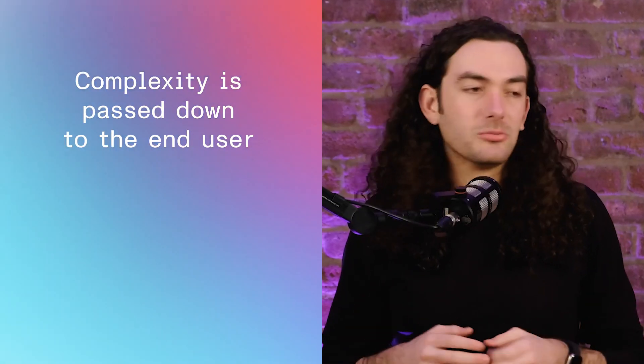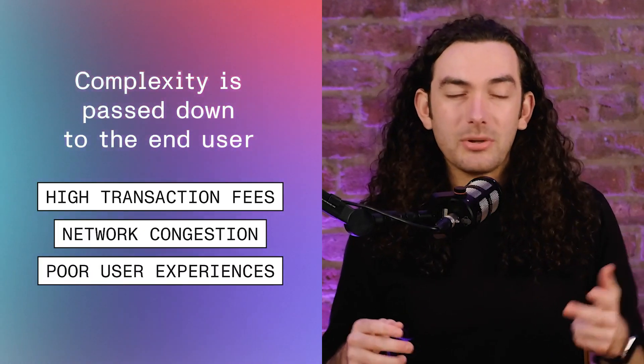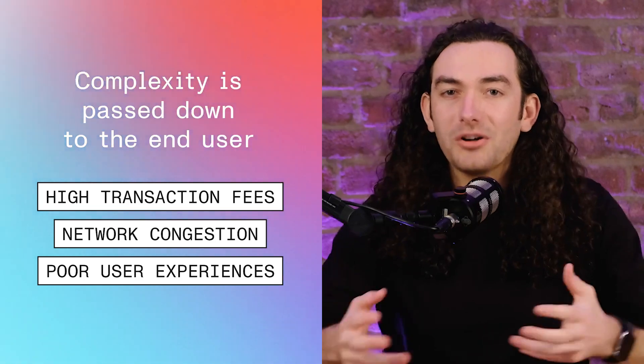Another key limitation is block space, and block space is the real estate of blockchain — it's your ability to commit operations and state to the ledger. The problem is block space isn't very flexible. Although upgrading systems is possible, there can be inefficiencies in these upgrades that introduce huge cost burdens to developers. Without the flexibility to customize systems to specific problems, complexity is passed down to the end user with high transaction fees, network congestion, and poor user experiences, amongst other issues that they shouldn't have to worry about.